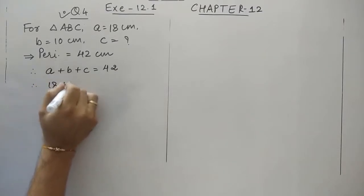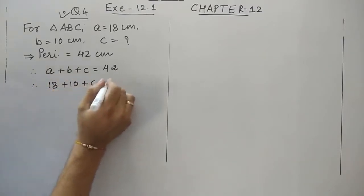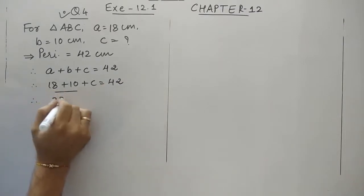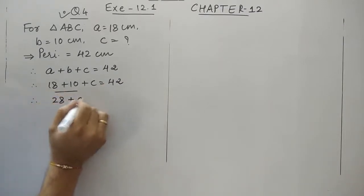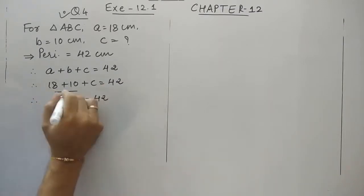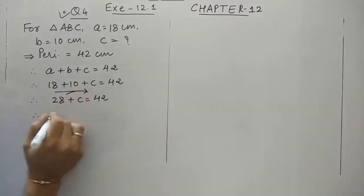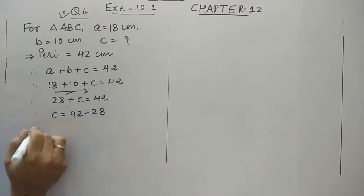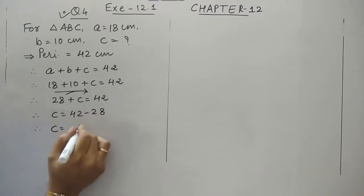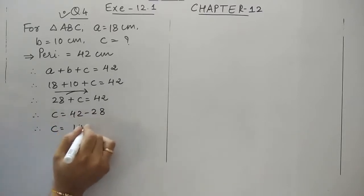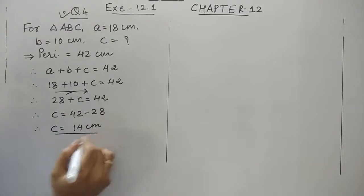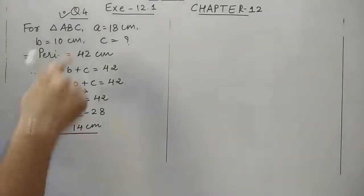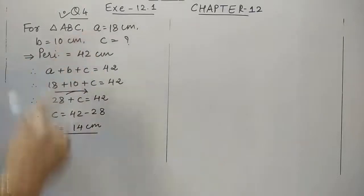We know that the perimeter is the sum of all 3 sides. So we will find out the 3rd side first. The sum of the 2 given sides is 28. So the 3rd side is 42 minus 28, which equals 14 cm. Now we have all 3 sides: A, B, and C.